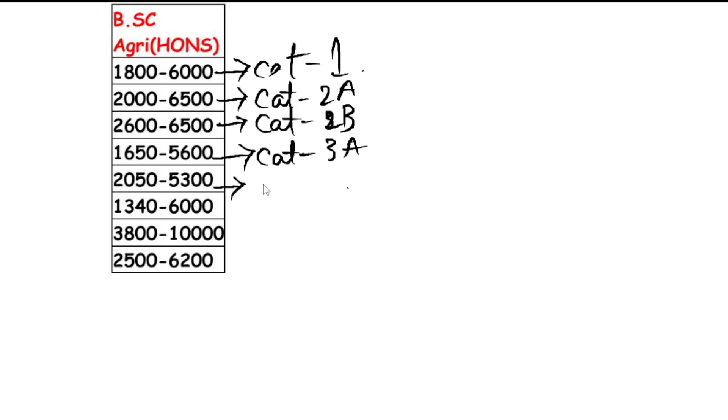Next, for category 3B, 2,050 to 5,300, category 3B seat you can go to. This is the fourth. Next ranking is for general merit, okay, general merit.